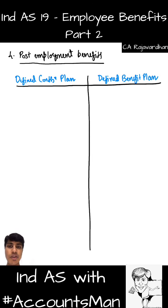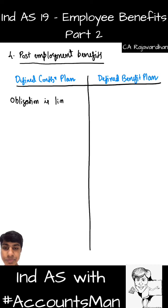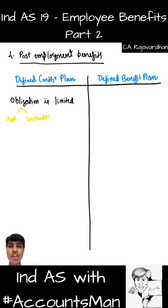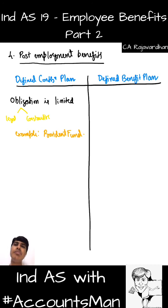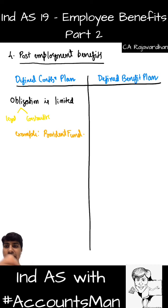With respect to defined contribution plan, the obligation is limited — specifically the legal and constructive obligation is limited to the amount I am supposed to contribute. The best example for this is provident fund. Every month I will contribute a certain percentage of salary to provident fund, and at the end the lump sum goes to my employee. I am not promising a specific final amount — my contribution amount is fixed, so my obligation is predetermined.